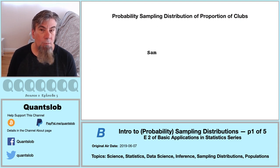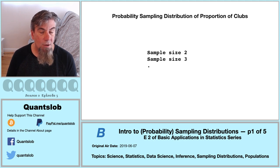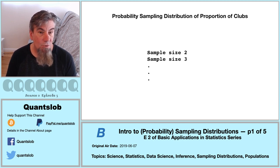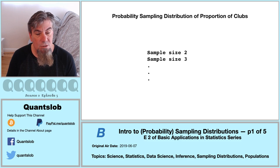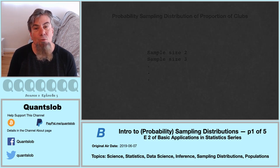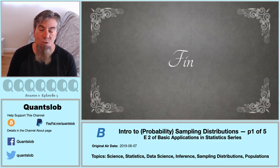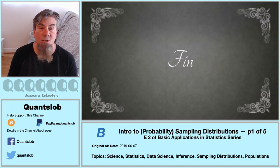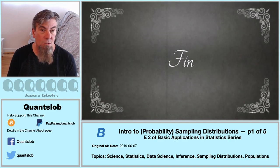And just now, we've introduced a proportion as a random variable. A sample proportion of cards suited as clubs in a sample of one is pretty easy to deal with. What about sample sizes greater than one? This is where we're going to pick up in part two of this mini-series. Thank you so very much for tuning in, and don't forget to stay tuned for more QuantSlob.